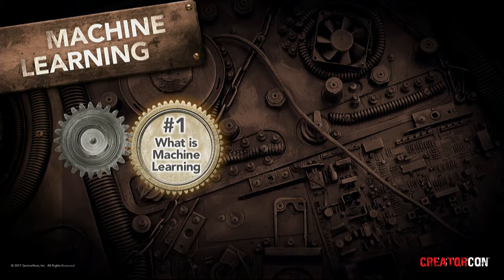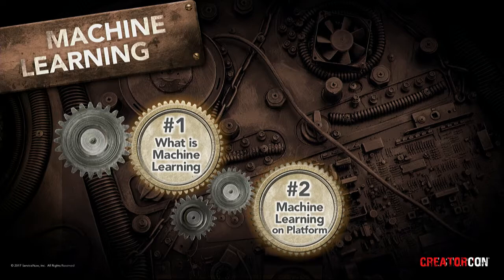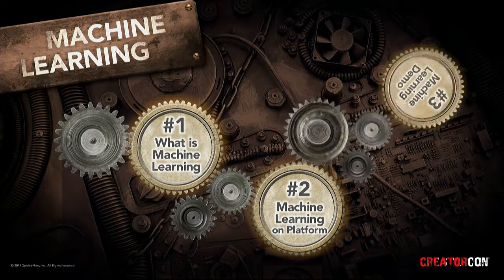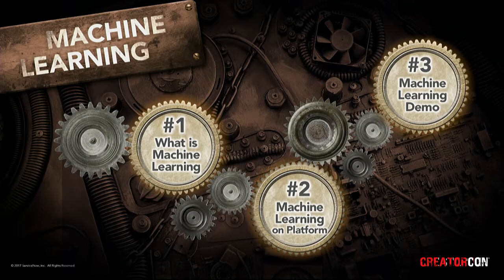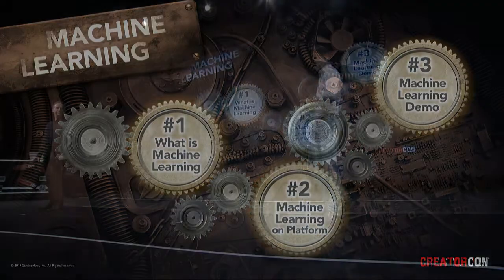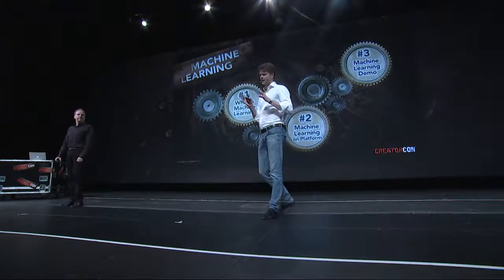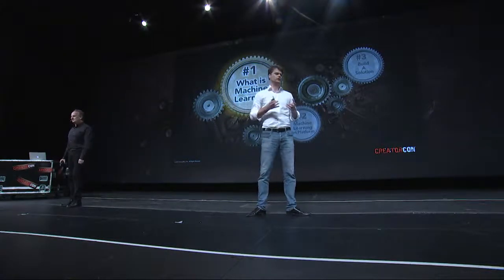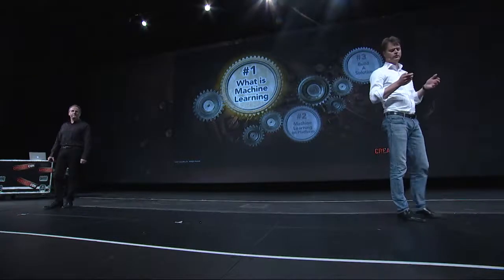There are three things we want to talk about. First, we want to talk about what we believe machine learning is — let's put some context on it because everything is called machine learning nowadays, it's the big marketing word. Second, we're going to talk about what we've built in the platform, which is the result of the DX Continuum acquisition we did six months ago. And then lastly, as Pat already pointed out, we're going to build a Netflix-like or Amazon-like recommendation app to pick knowledge labs.